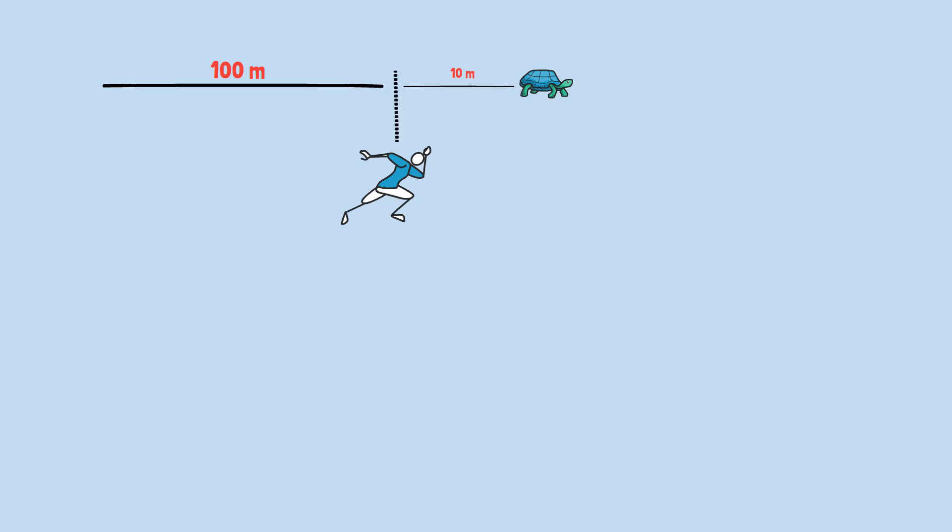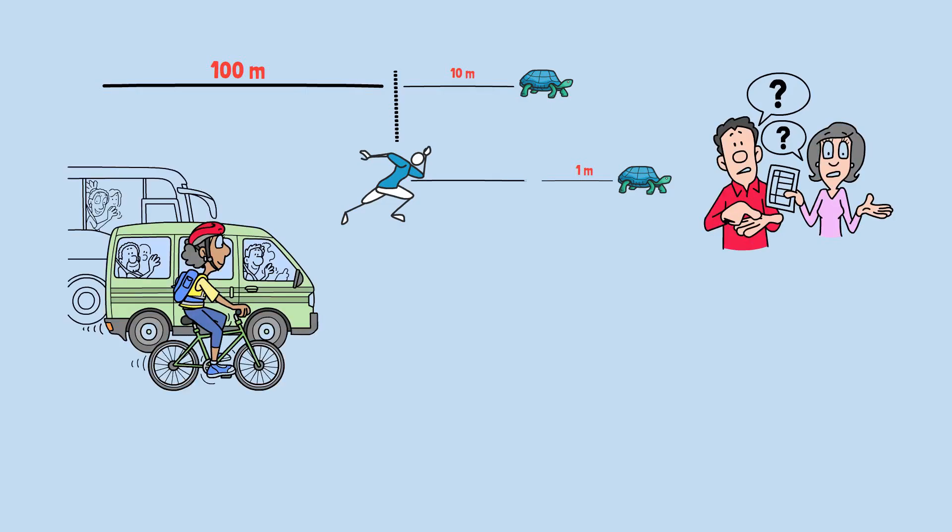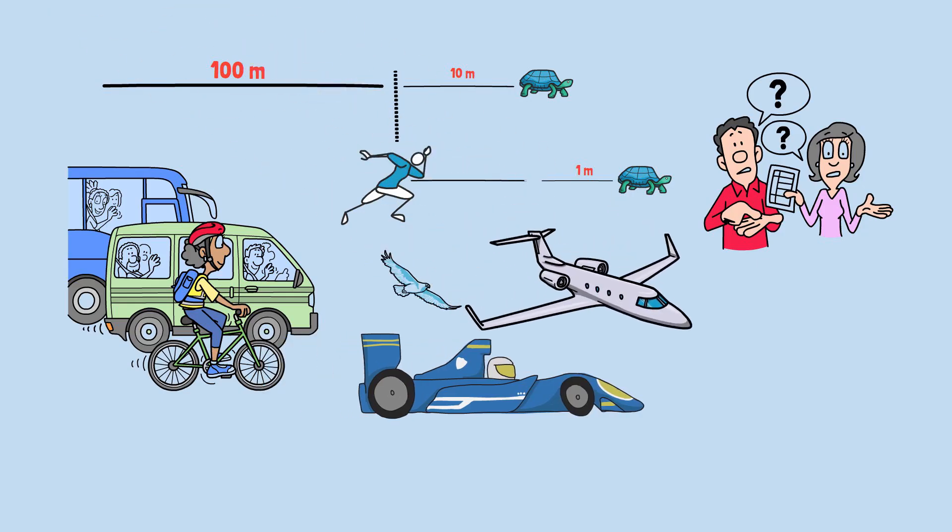Every time he reaches where the tortoise was, the tortoise has moved to a new position. There's always another gap to close, no matter how small. But wait, this is clearly absurd. We see faster objects overtake slower ones every day.